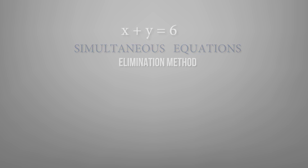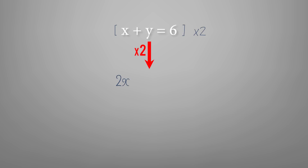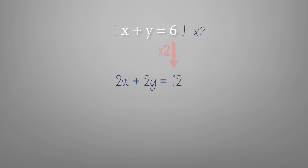Suppose we have an equation x plus y is equal to 6, and we wanted to double this equation. To do this we'd have to multiply each term in the equation by 2, not just the first term. So it becomes 2 multiplied by x to give us 2x, 2 multiplied by y to give us 2y, and 2 multiplied by 6 which is equal to 12. So our new equation becomes 2x plus 2y is equal to 12.